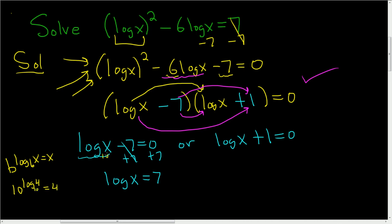So there really is a 10 here and there is a 10 here. So here we exponentiate both sides and we just get x equals 10 to the 7th.